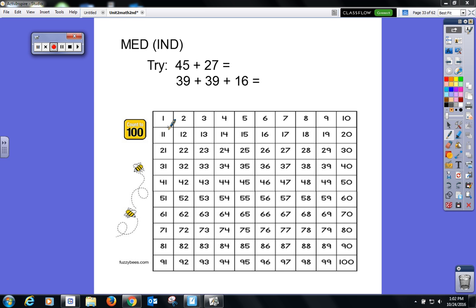Are we ready? Yep. All right, we're going to add 45 plus 27 this time. So what number should we start on, Emily? 40. 40. Yeah, so circle 45 on your hundreds chart.